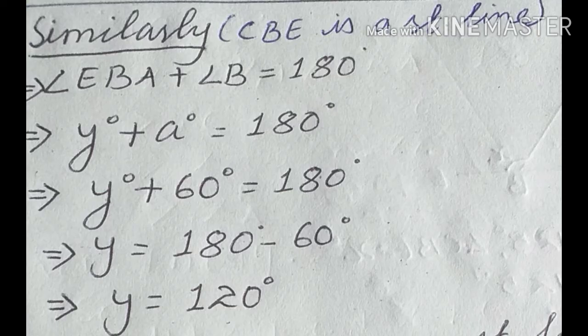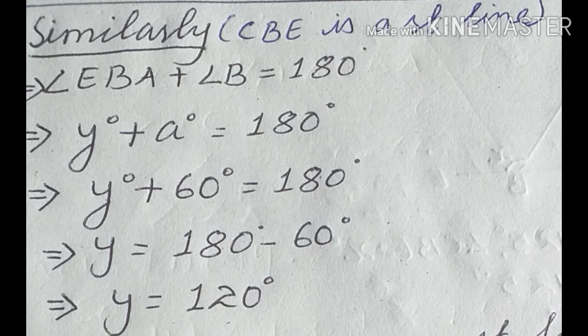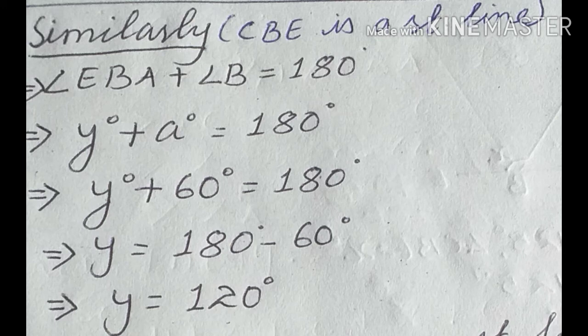Now to find exterior angle y, take straight line CBE. Similarly, angle EBA plus angle B equals 180 degrees. Angle EBA is y and angle B is a, which we found is 60 degrees. So y plus 60 equals 180, therefore y equals 180 minus 60, giving us y equals 120 degrees.